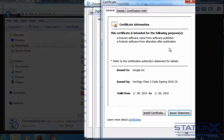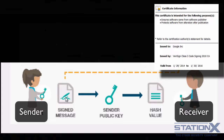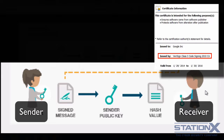To verify that this digital signature is valid, we have to reverse the original process. We have the signed software, and we use the sender's public key — in this case VeriSign's — to decrypt it and reveal the hash. We can then take the file, run it through the same hashing algorithm, compare hashes, and confirm that the software has maintained its integrity.